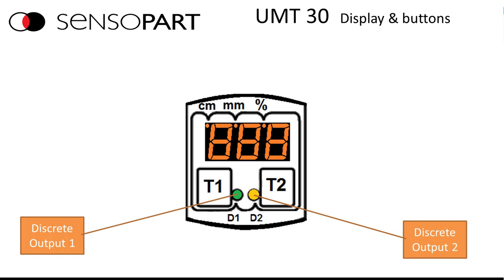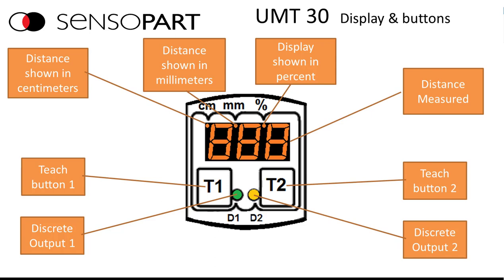So this shows again the discrete outputs and the two teach buttons. T1 teaches discrete one, T2 teaches discrete two.